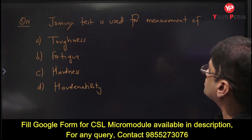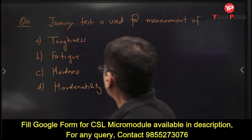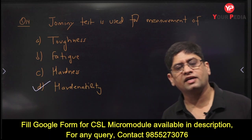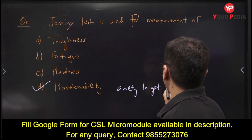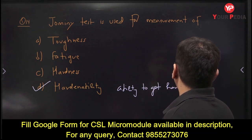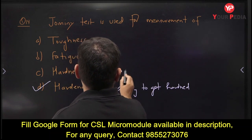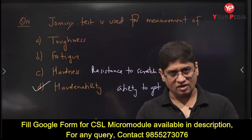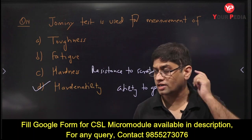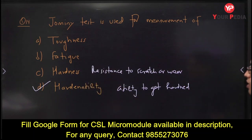Next: the Jominy test is used for the measurement of what? The answer is hardenability — the ability of a material to get hardened. Hardenability is different from hardness. Hardness is resistance to scratch or wear, measured by tests like Vickers, Rockwell, etc. For hardenability specifically, the Jominy test is used.